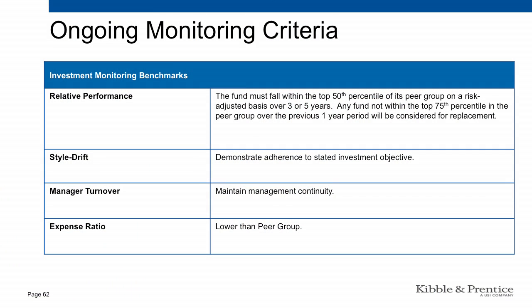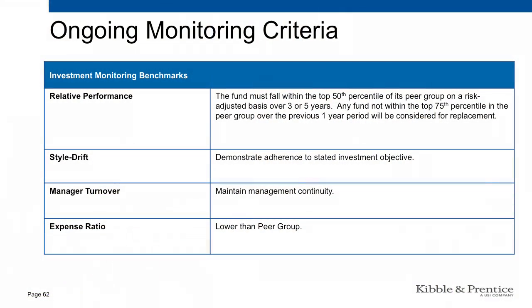For ongoing monitoring, the criteria are not quite as stringent as initial selection. Every quarter we formally meet as an investment committee and monitor performance. Each fund must be within the top 50th percentile within its peer group on a risk-adjusted basis — using the Sharpe ratio — over three or five years. Any fund not within the top 75th percentile over the previous one-year period will be considered for replacement. Even if a fund looks fantastic over three and five years, if more than 75 percent of peer funds are outperforming it over the last year, we'll take a closer look.